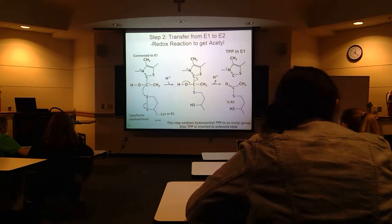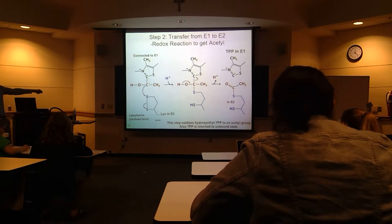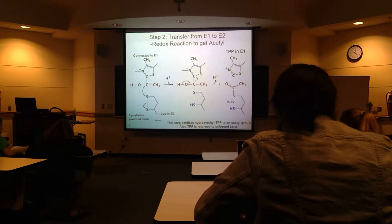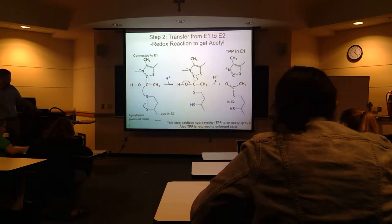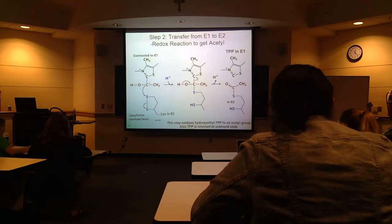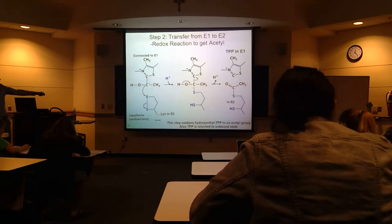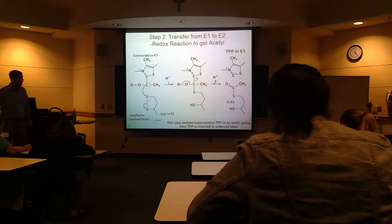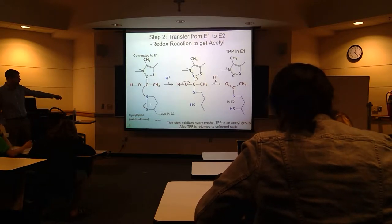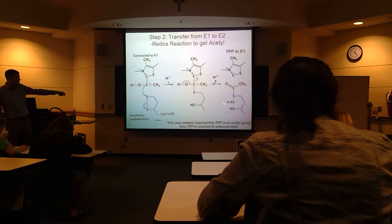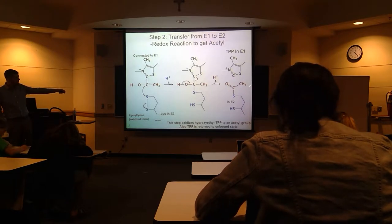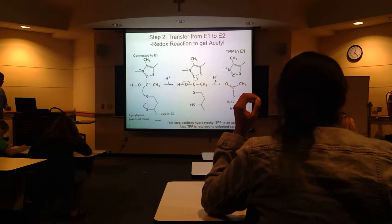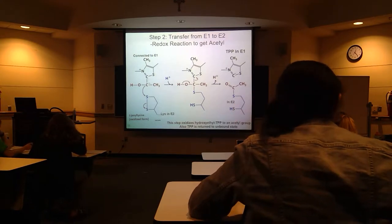We have the leftover carbons from TPP here — this is in E1 — these are the carbons leftover from pyruvate that are linked to TPP. Now we have lipoyllysine in E2, and this is the swap, swapping the carbons from E1 to E2. In the oxidized form, we attach the acetyl group that initially came from pyruvate to lipoyllysine, and it gets converted to the reduced form. So now in the reduced form in E2, this acetyl group is on there — those atoms came from the pyruvate.